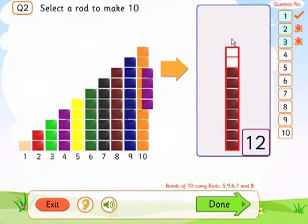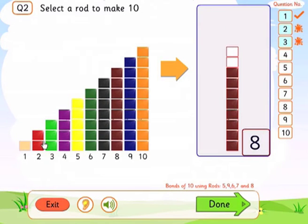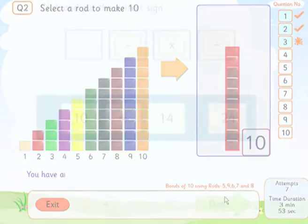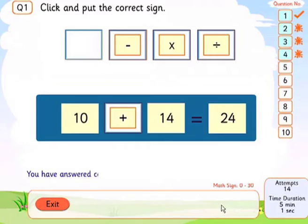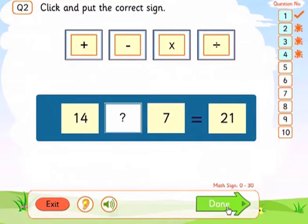Slow processing speed and working memory overload can cause frustration, zoning out and anxiety. Confusion over the use of signs and the application of the four rules.